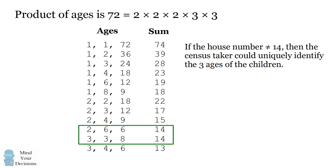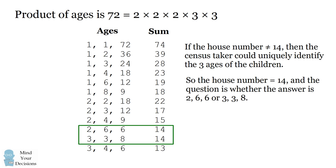So when the census taker says he's tried to work it out but still can't figure it out, knowing the house number, that means the house number has to be 14. So the census taker is trying to figure out whether the three kids are aged 2, 6, and 6, or 3, 3, and 8.